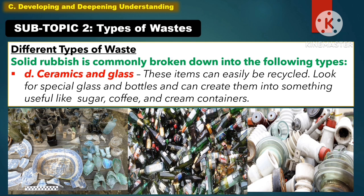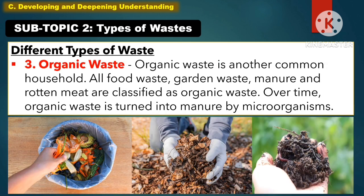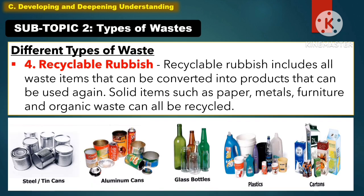Another type of solid rubbish is ceramics and glass. These items can easily be recycled. Look for special glass and bottles and create them into something useful, like sugar, coffee, and cream containers. Another type of waste is the organic waste. Organic waste is another common household waste. All food waste, garden waste, manure, and rotten meat are classified as organic waste. Over time, organic waste is turned into manure by microorganisms.